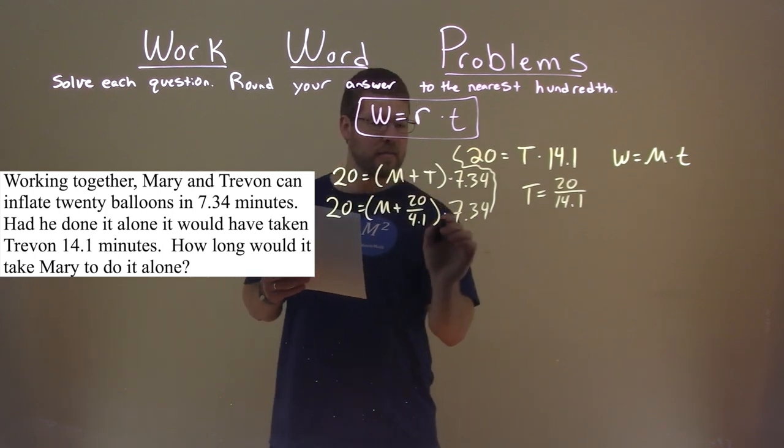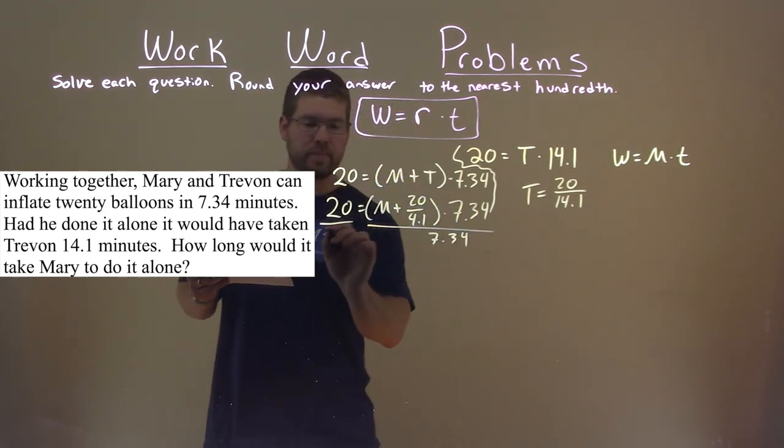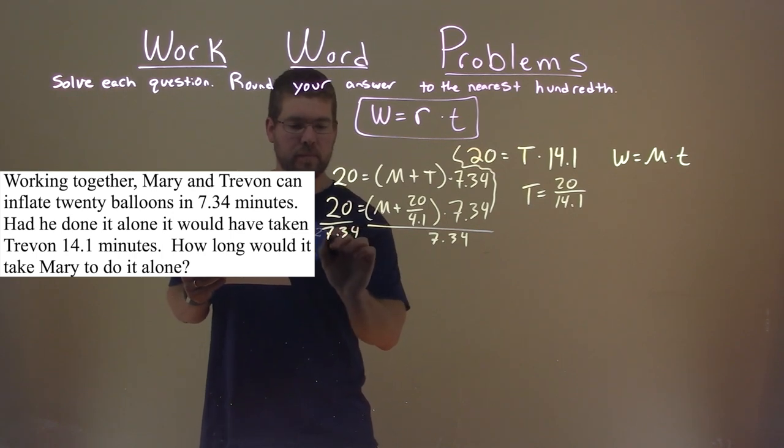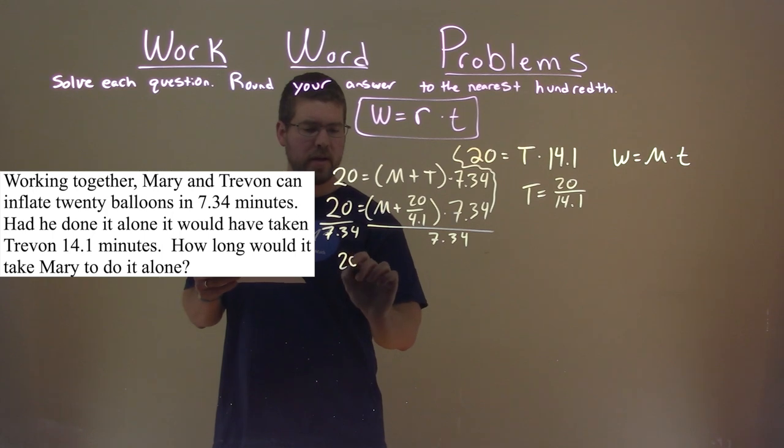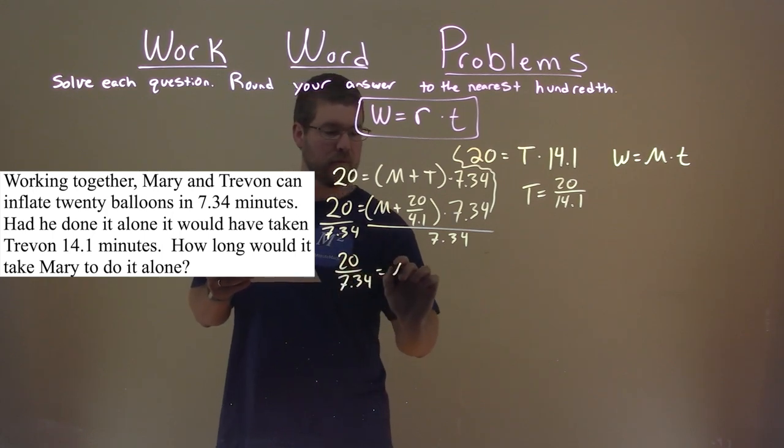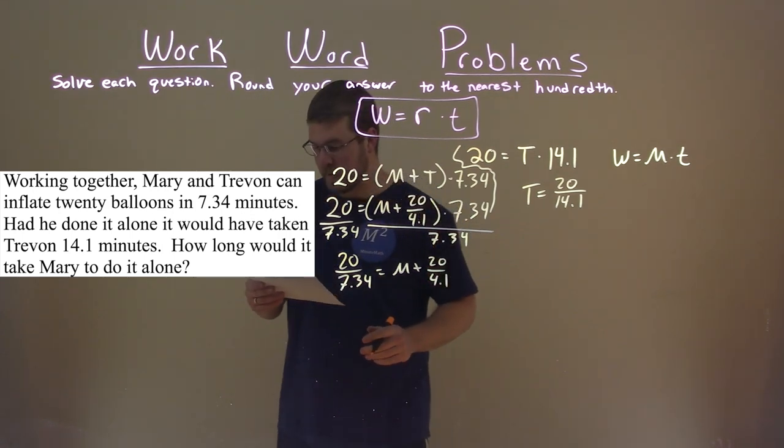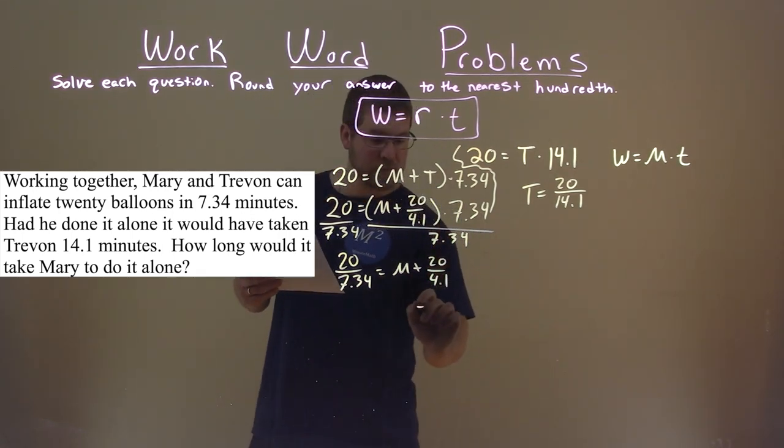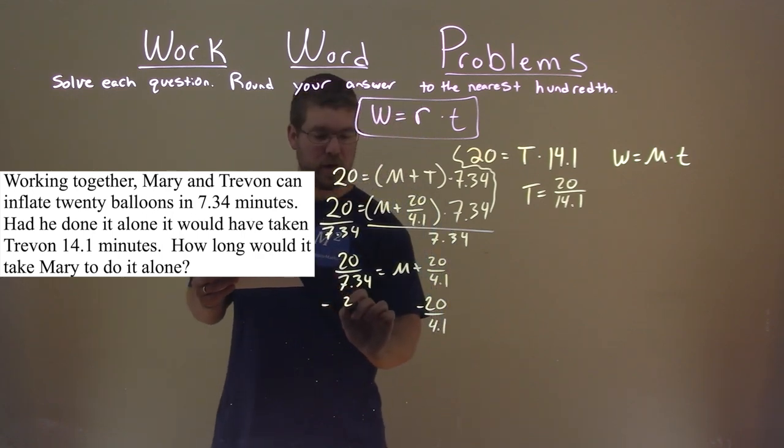I'm going to divide, so this is a multiplication, divide both sides by 7.34. I'm going to have a lot of decimals here. And so we have 20 over 7.34 is equal to M plus 20 over 4.1. And then I'm going to subtract 20 over 4.1 here to both sides. And make sure you keep everything lined up.